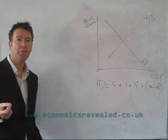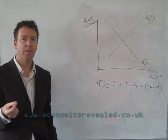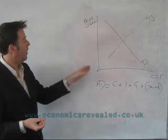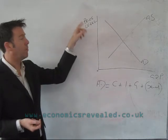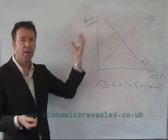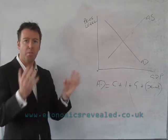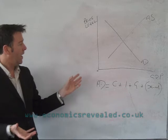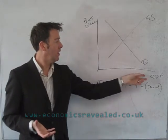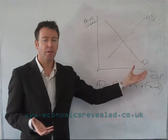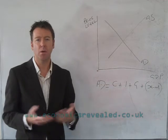And when you draw an aggregate demand and aggregate supply diagram, we replace the vertical axis. Instead of having price, you tend to put price level because it represents the level of all prices in an economy. And rather than quantity on the horizontal axis, we can put something like GDP or national income.